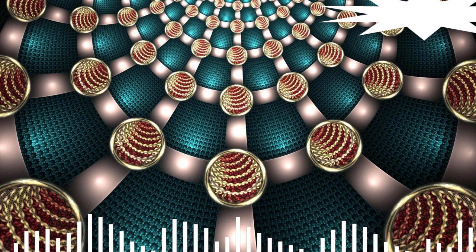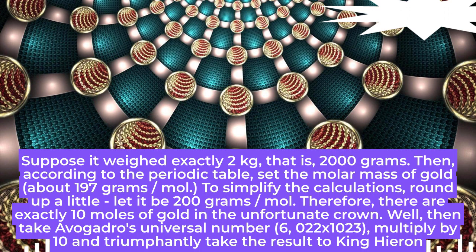First you need to accurately weigh the crown. Suppose it weighed exactly 2 kg, that is, 2,000 grams. Then, according to the periodic table, set the molar mass of gold, about 197 g/mol. To simplify the calculations, round up a little, let it be 200 g/mol. Therefore, there are exactly 10 moles of gold in the unfortunate crown.